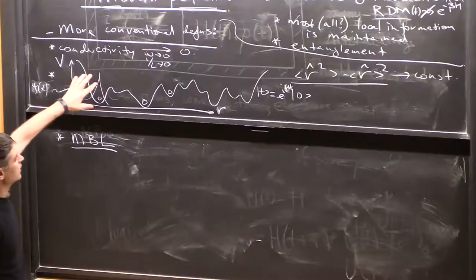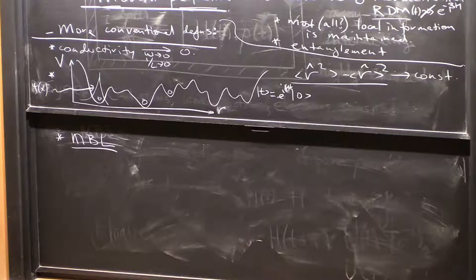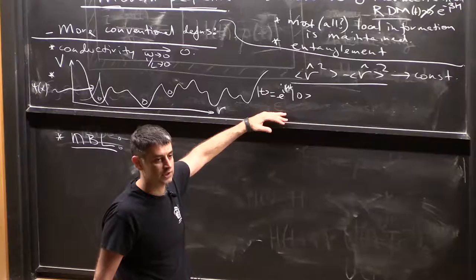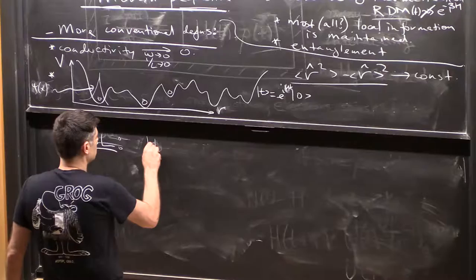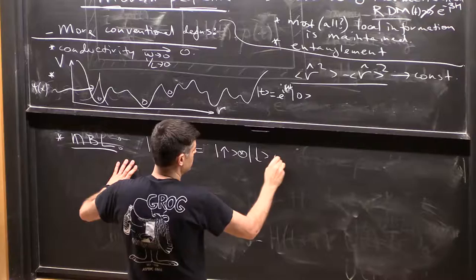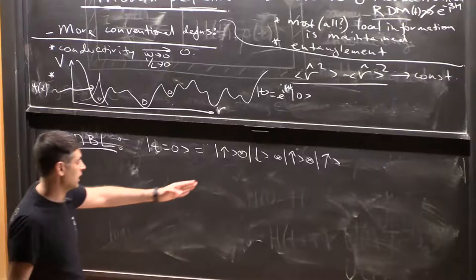In many-body localized systems, we would like to again be able to have options about what to study. The most naive generalization is this idea that you can start at time equals zero with a state that's a simple product state. If you have a bunch of spins, you imagine taking some kind of a bit string, and some people might refer to this as a classical state because with 100% probability you know which way the spins point.